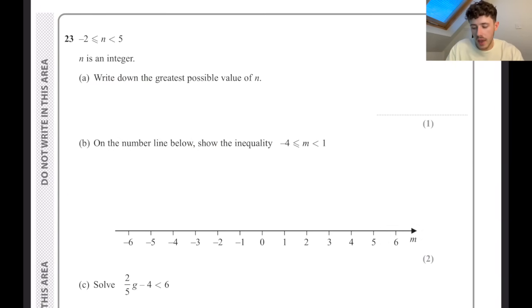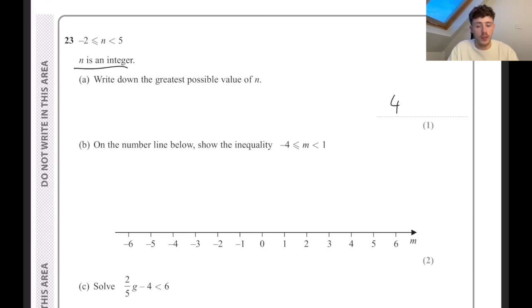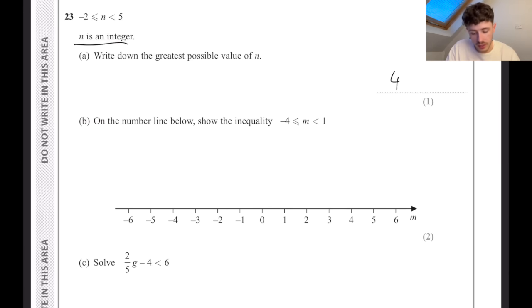Minus 2 is less than or equal to n, which is less than 5. Write down the greatest possible value of n if n is an integer. That is going to be 4 because it cannot be 5. On the number line below, show this inequality. So we find minus 4, we put a solid dot down there, we find 1, we put a hollow dot there, and then we put a line between them.